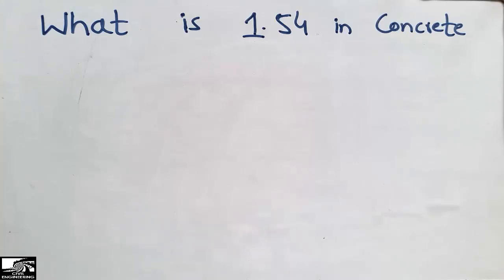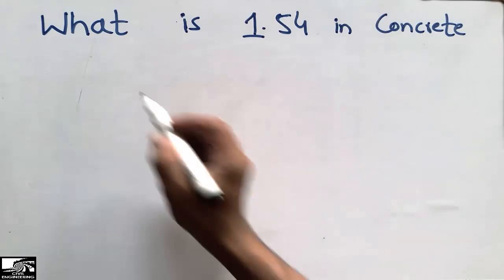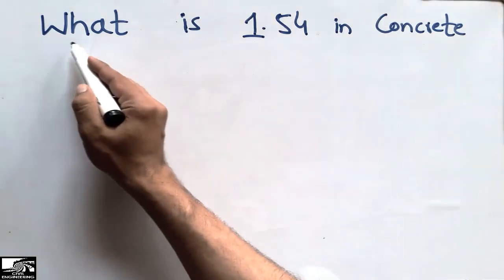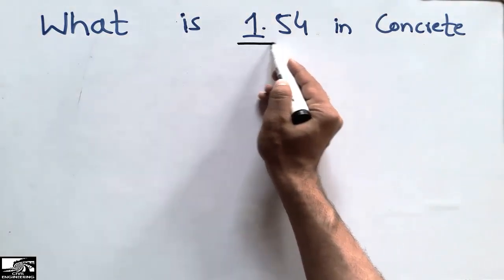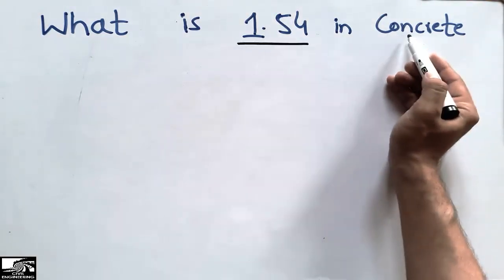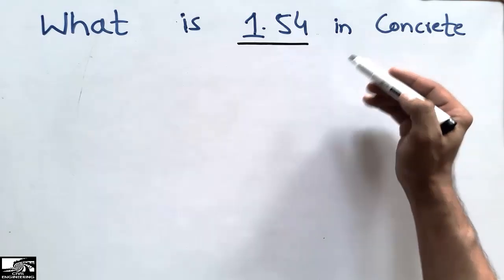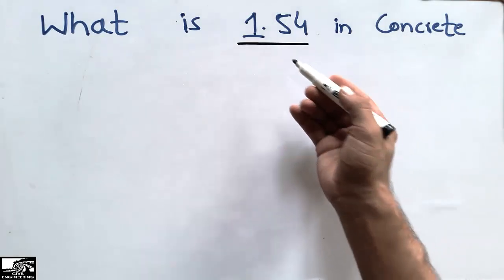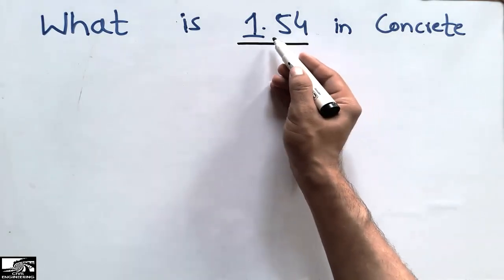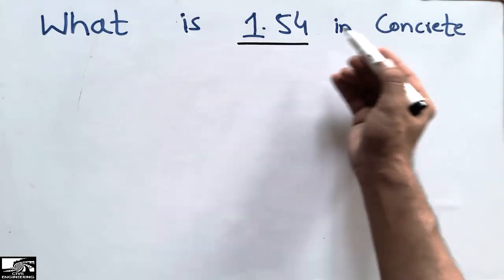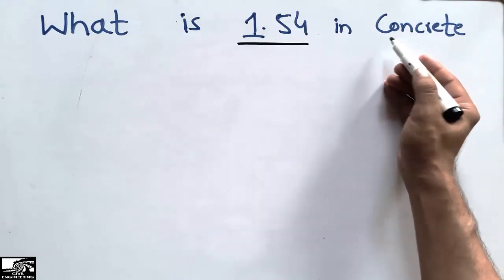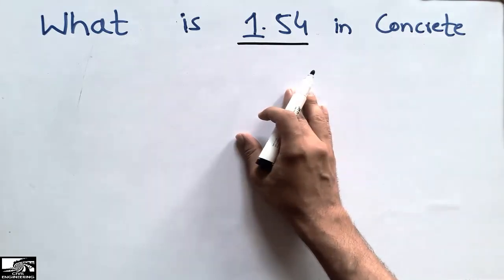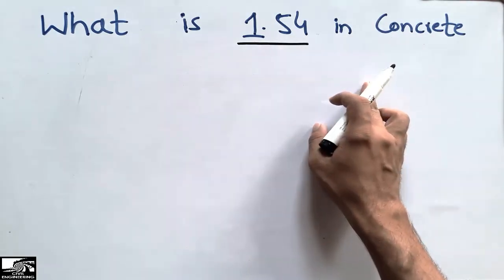Hello guys, welcome back to the Seven Engineering YouTube channel. Please subscribe our channel for daily Seven Engineering videos. Today our lecture is about the use of the 1.54 ratio in concrete. You may have heard about this ratio — why we use this ratio in concrete — so I will explain this ratio with an example in this lecture.